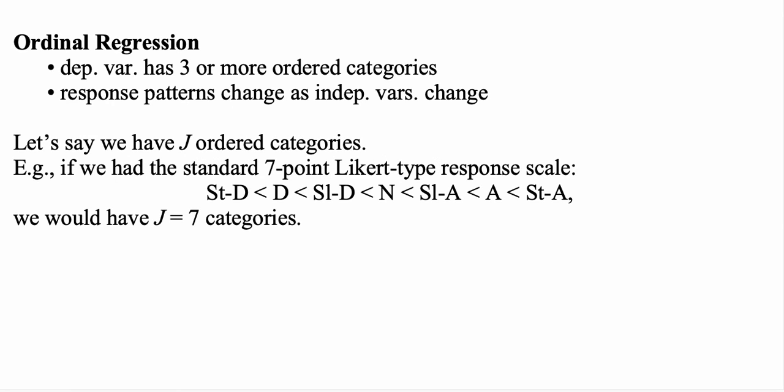Let's say that we have J ordered categories. For example, if we're looking at the standard 7-point Likert-type response scale, which ranges from strongly disagree to strongly agree, we would have J equals 7 categories.